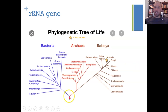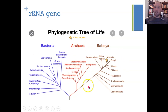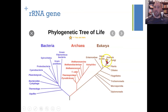A phylogenetic tree shows a common ancestor for all organisms, with a split between bacteria and archaebacteria, and then eukaryotes splitting from archaebacteria later. This is based on differences in ribosomal RNA between species — more differences indicate a more distant common ancestor. Animals, fungi, and plants share a recent common ancestor with very similar ribosomal RNA, whereas comparing animals to methanobacterium shows many more differences in ribosomal RNA genes.